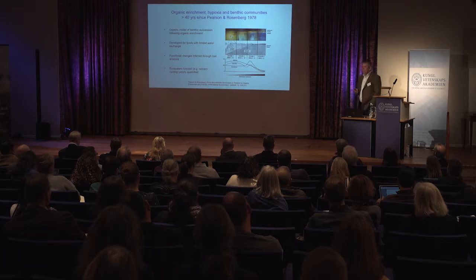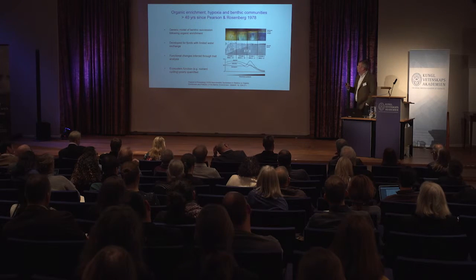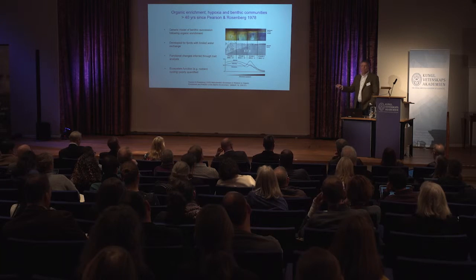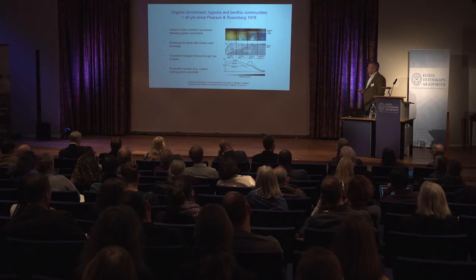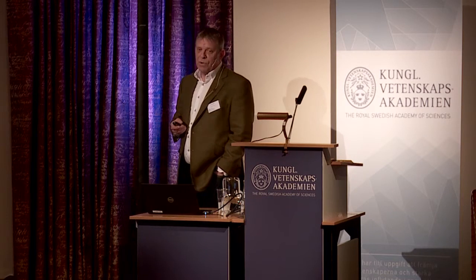A lot of subsequent work has been done following that paper, where people have inferred functional changes along this gradient through, for example, traits analysis. But actually the quantification of ecosystem functions and how they change is hard to do. We've tried to make the point that we really need to address what organisms do in the sediment, because they might be so important for biogeochemical cycling. Nevertheless, it's so complex to include this biodiversity that we rarely have biodiversity included in different models that try to predict biogeochemical cycling in relation to hypoxia. In shallow areas especially, the organisms will be really important for the overall picture.